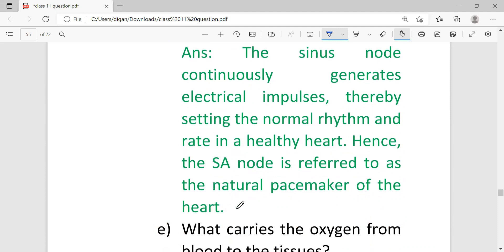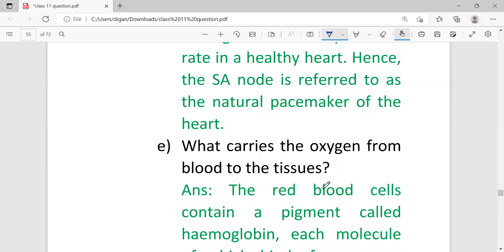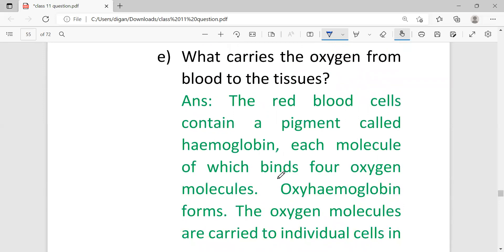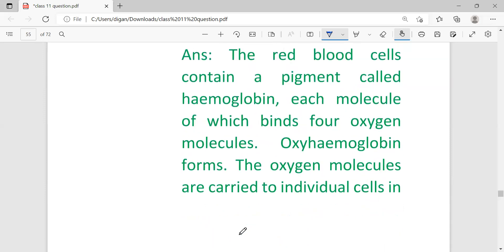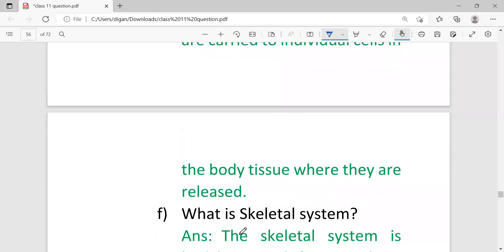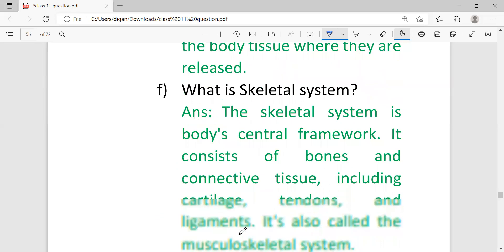Next question: what carries oxygen from blood to tissue? RBCs, red blood cells, contain a pigment called hemoglobin, each molecule of which binds four oxygen molecules and oxyhemoglobin is formed. Then the oxygen molecules are carried to individual cells in the body tissue where they are released.